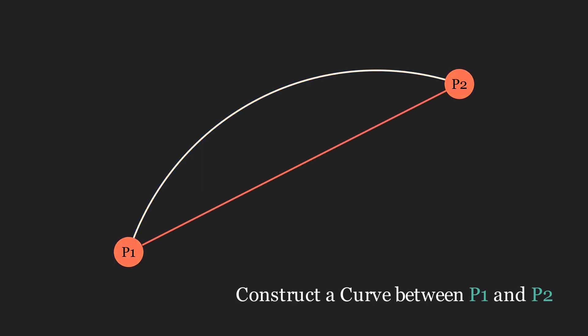Say you're given two points. How would you construct a curve between them? Most of you might intuitively want to draw a line like this and while that's fine, even a straight line between the points could be considered a curve.